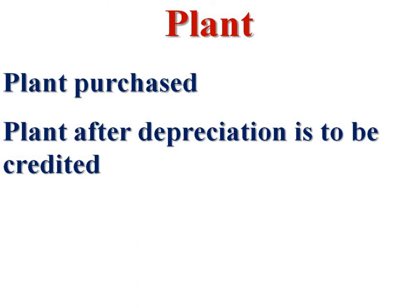There are two treatments for plant. First treatment: only depreciation is to be debited. Opening plant plus plant purchased is debited; depreciation and closing plant are credited. Second treatment: opening plant plus plant purchased minus depreciation is debited. These two treatments can be adopted when preparing the contract account for plant.